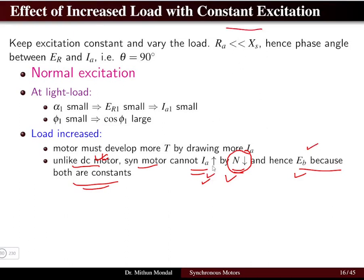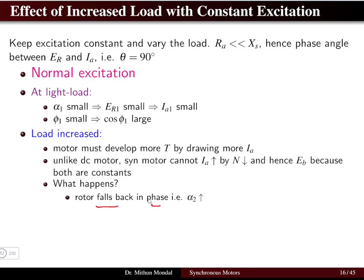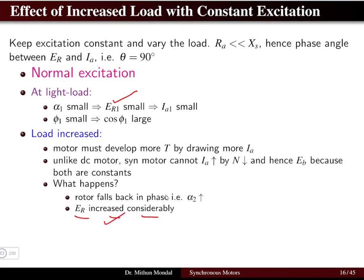So what happens is that the current will not increase in the same way as a DC motor. When the load is increased, the rotor will fall back in phase because the torque angle will increase. So in the second case when the load is increased, the torque angle increases, which means the resultant EMF increases considerably. This means that the current will be more and hence the torque will be more.